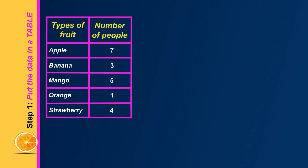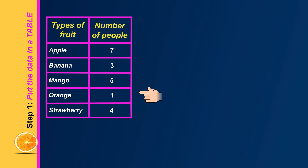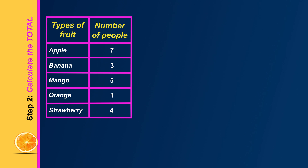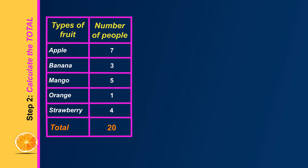The final example is about the favourite fruits of the people who were surveyed. Step one is to display the data in a table like this. As their favourite fruit, seven people chose apple, three chose banana, five chose mango, one said orange, and four preferred strawberry. Step two is to add these to get the total number of people surveyed — seven plus three plus five plus one plus four adds to a total of 20 people surveyed.